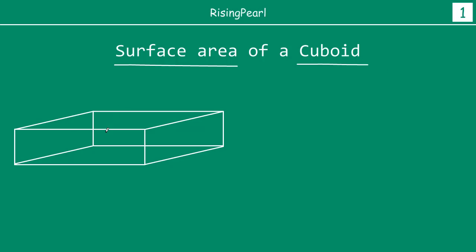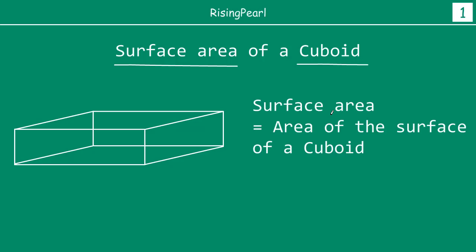Here we have drawn a cuboid, and we want to find out its surface area. Surface area is simply the area of the surface of the cuboid. A cuboid has six sides, also known as faces. So the surface area of a cuboid will be equal to the area of the surface of all six sides.